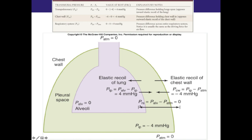The last pressure is respiratory system pressure — the pressure difference across the entire respiratory system. It's alveolar pressure minus atmospheric pressure. At rest, they're basically the same, both zero. With inhalation, alveolar pressure becomes negative, pulling air in. With exhalation, alveolar pressure becomes positive, pushing air out. So respiratory system pressure is the driving force for airflow.